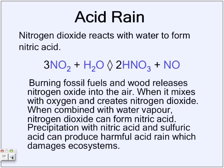Acid rain. When we burn fossil fuels or wood, there are emissions, exhausts, or smoke, and in that there is nitrogen oxide — NO. Because it is in the air and there is oxygen in the air, you combine the oxygen with the nitrogen oxide and now there is nitrogen dioxide.